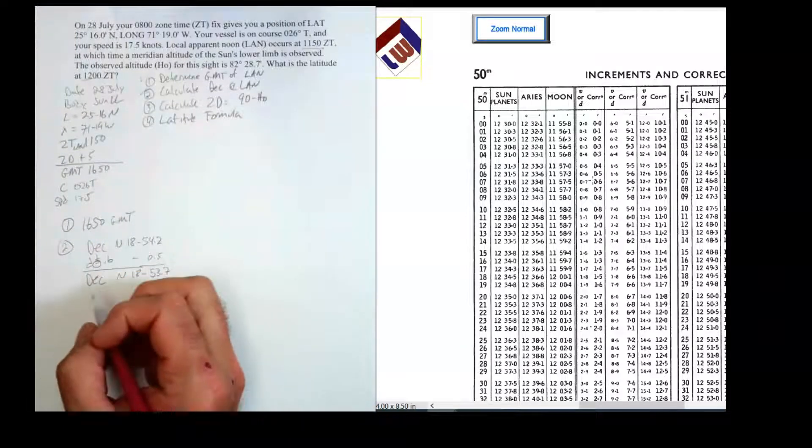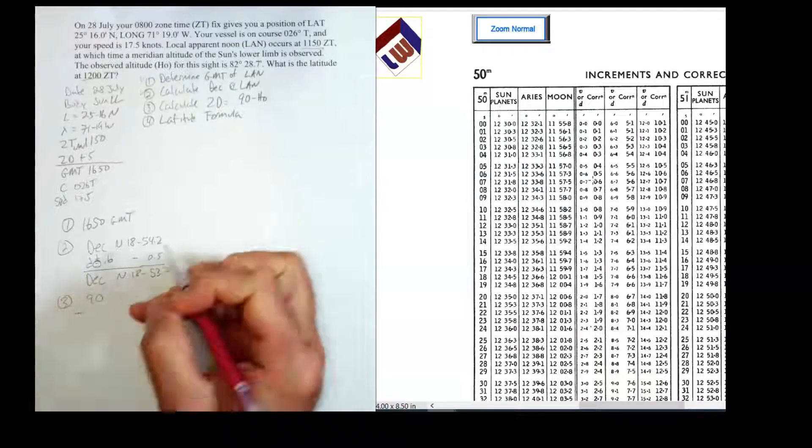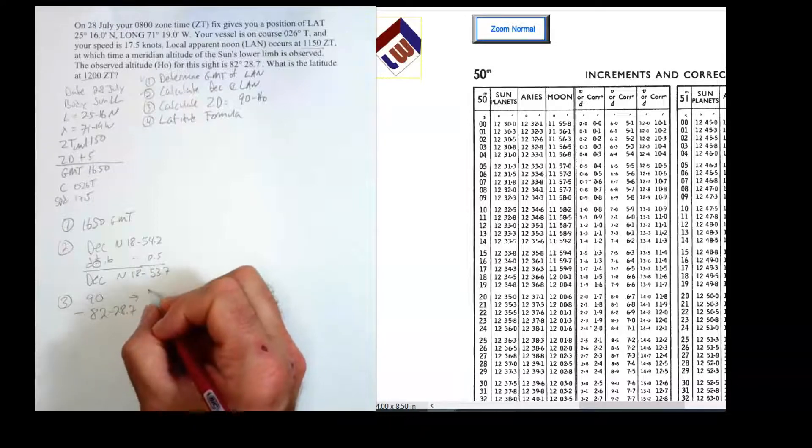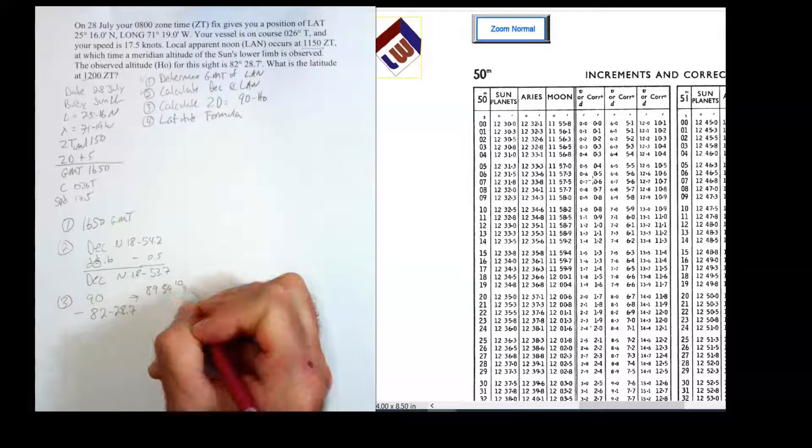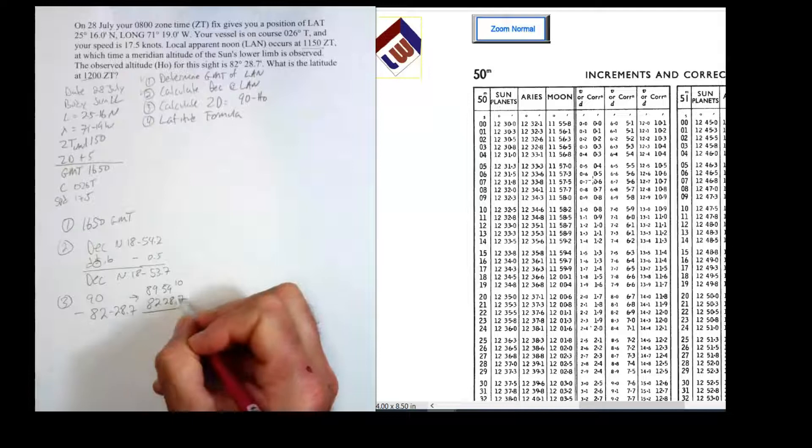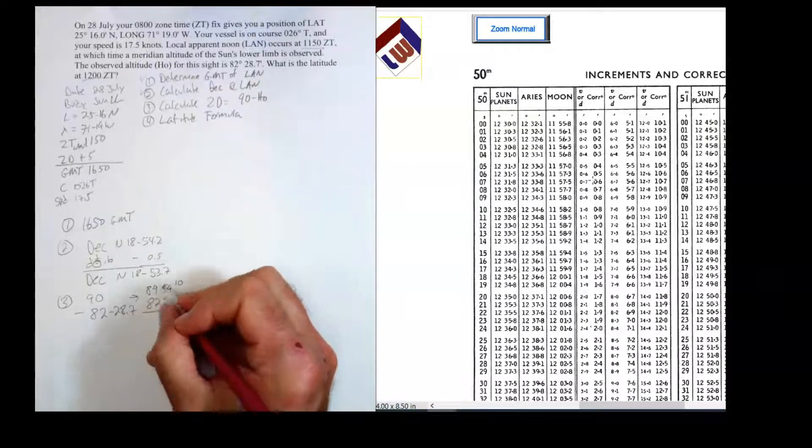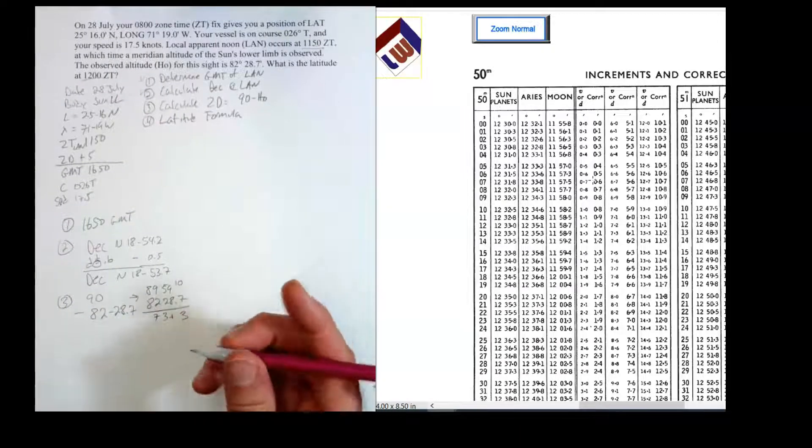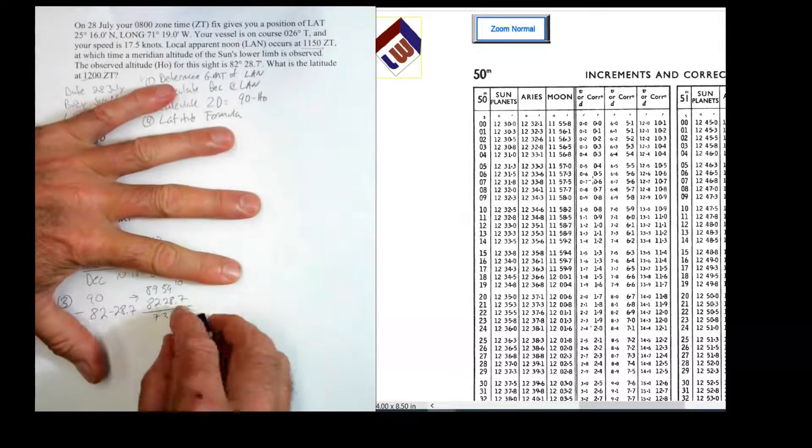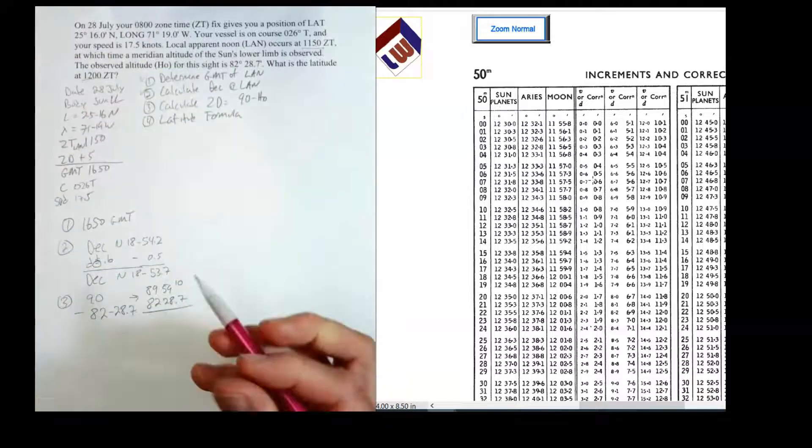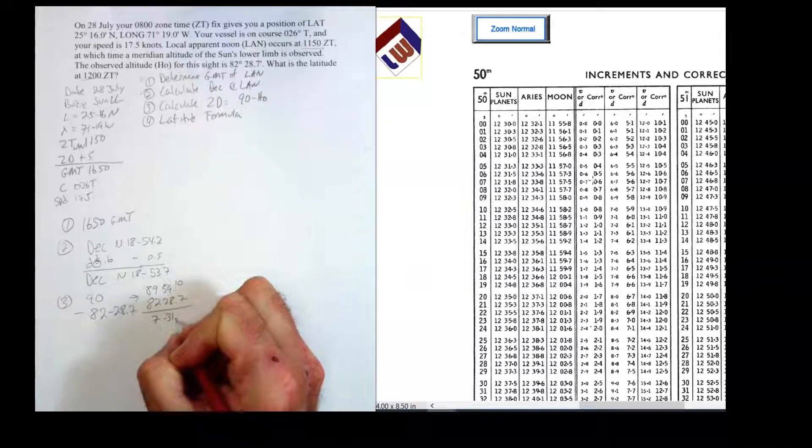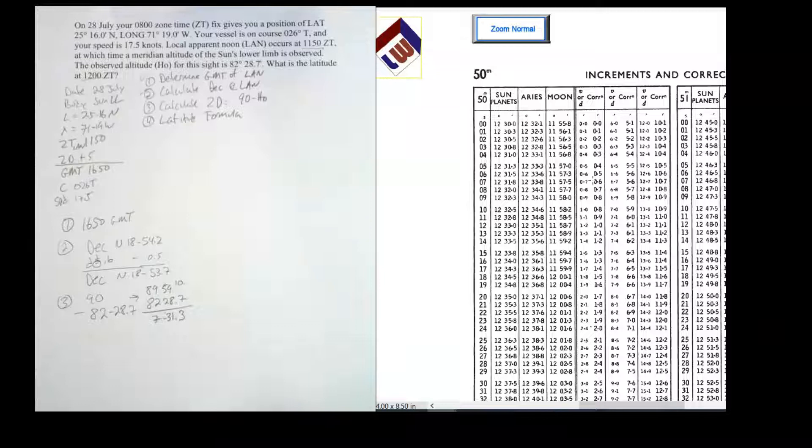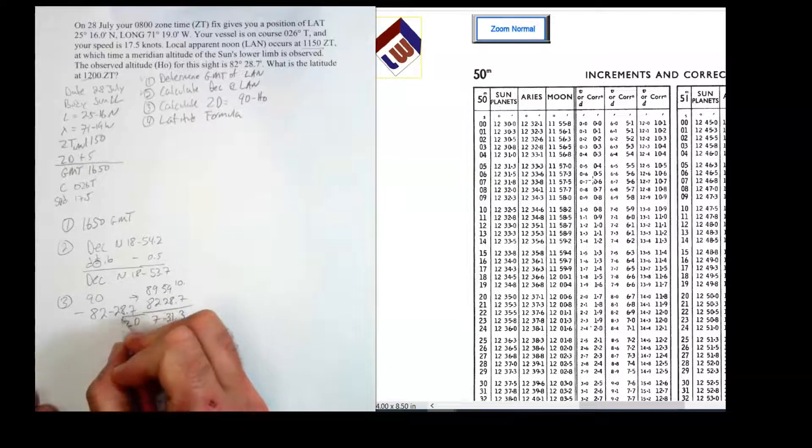Now we're going to calculate ZD. ZD is always 90 minus HO. So I've got 90 minus, the HO given was 82, 28.7. What I'm going to do here is I'm just going to make this easy to do on the paper here. That's 89, 59, 10. So 82, 28.7. So 7 from 10 tenths is 3 tenths. That's 1, that's 3, that's 7. So it looks to me like ZD is 7... wait a second. I got a little boo-boo there. I got a little mess going on here. So it's 7, 31.3. I just needed to clean that up just a little bit. So that is ZD.